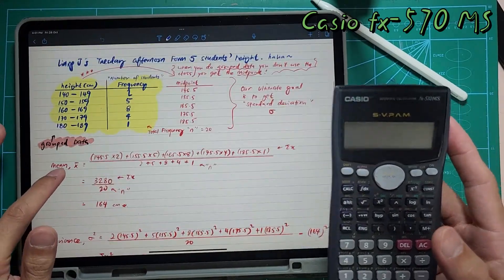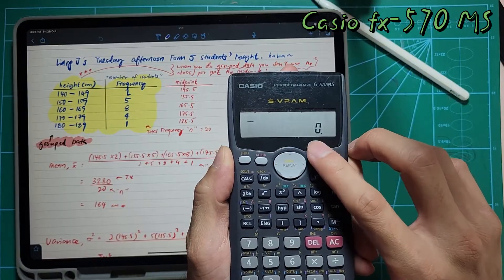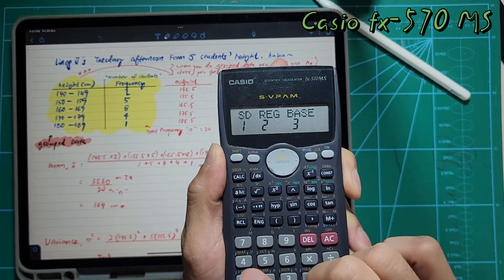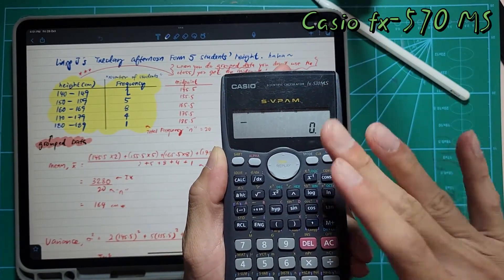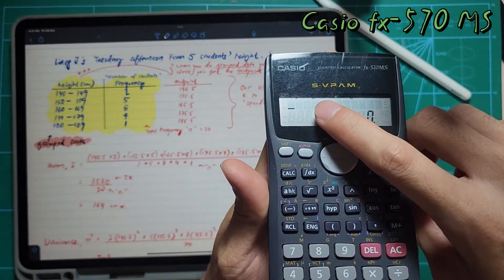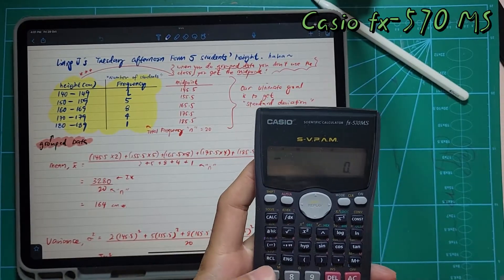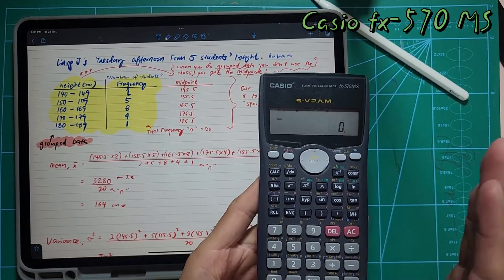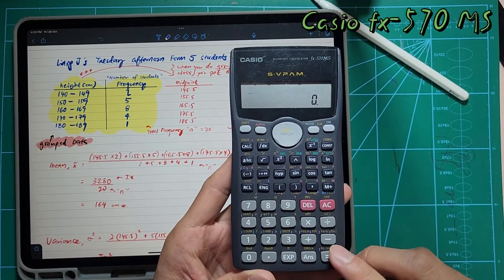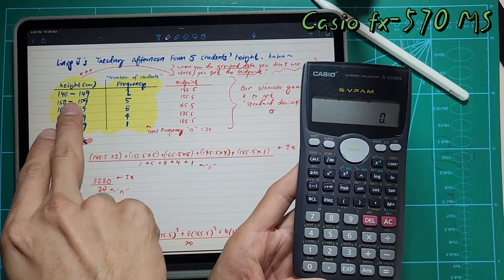First of all, you're going to press Mode two times. You'll see 'SD' — press 1 to put your calculator into standard deviation mode. You should see a little 'SD' indicator on screen, so that's correct. Now you're going to insert information, but be careful — remember we're going to use the M+ key, not the equal key.